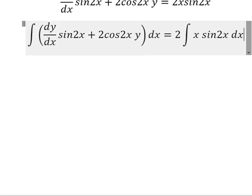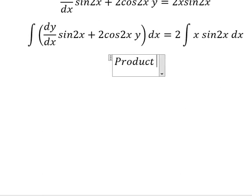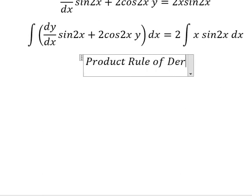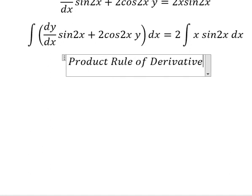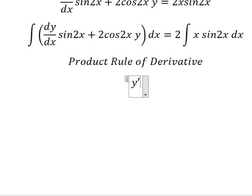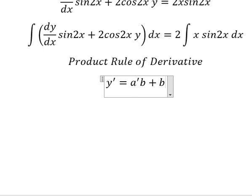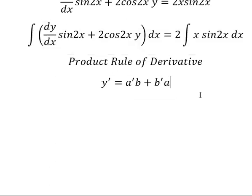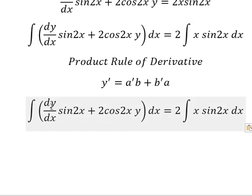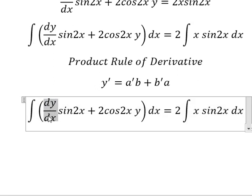Next we can use the product rule of the derivative. So we have the first derivative of y equals to the first derivative of a multiplied by b, plus the first derivative of b multiplied by a. So we have the first derivative of a multiplied by b.